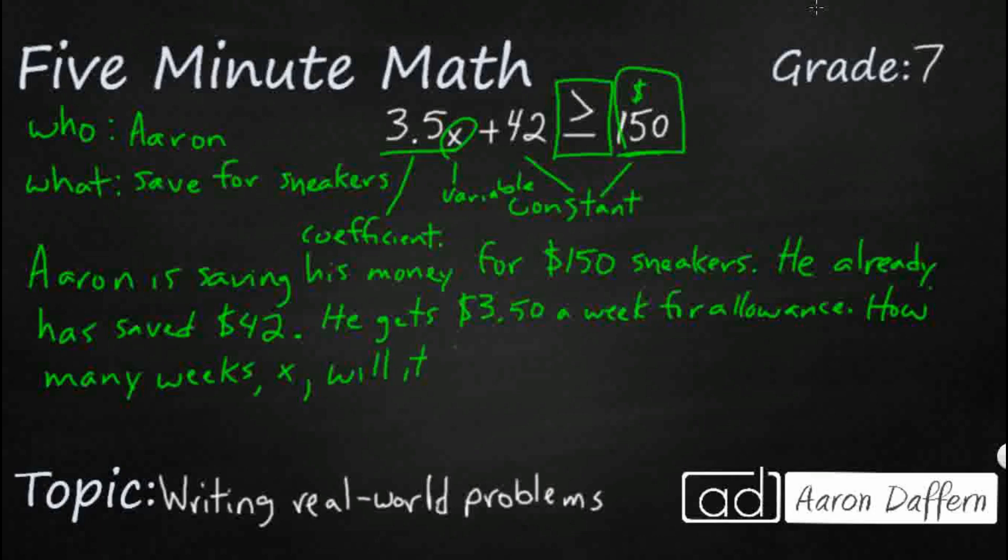Will it take for him? And then let's just say what he's trying to get. To have enough money. And then we've got it for the sneakers. And that is how we write a word problem.